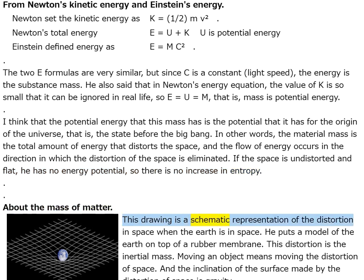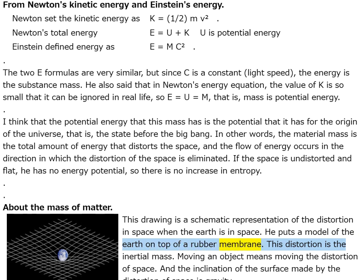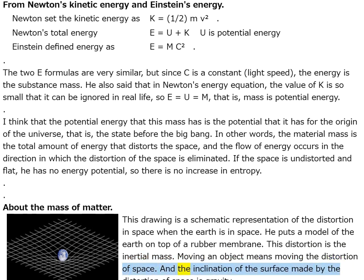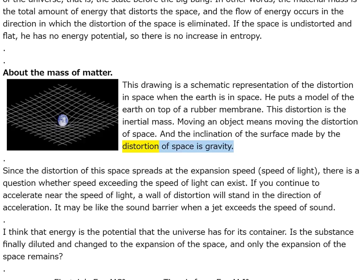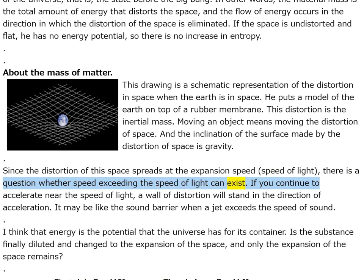A schematic representation of the distortion in space when the Earth is in space — like putting a model on a rubber membrane. Moving an object means moving the distortion of space, and the inclination of the surface made by the distortion of space is gravity. Since this distortion of space spreads at the expansion speed (speed of light), there is a question whether speeds exceeding the speed of light can exist.